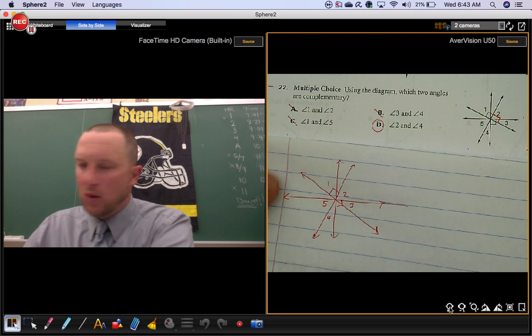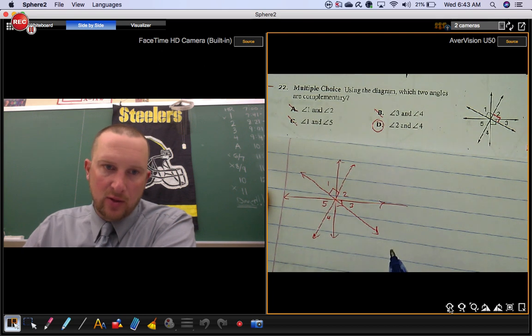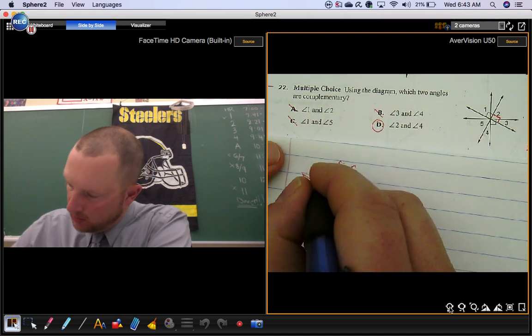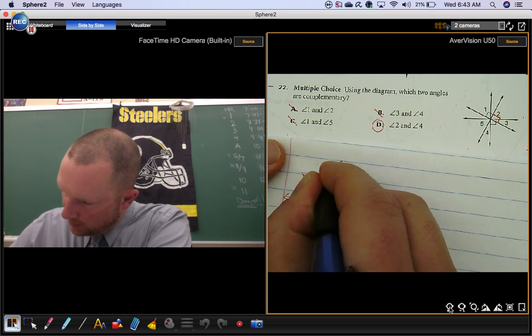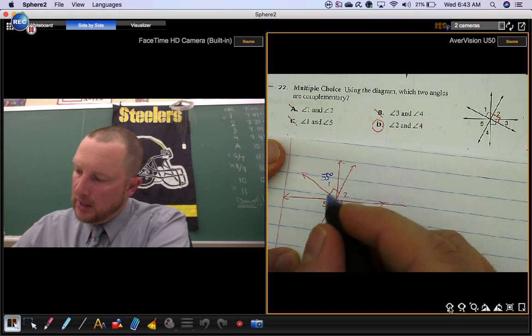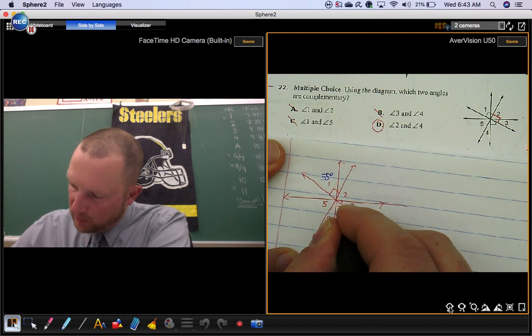We'll start with angle one. Angle one is part of a 90 degree angle. And it looks like it's the larger part of a 90 degree angle. So maybe we'll call it 55 degrees. Now, you know that its vertical angle down here is also 55 degrees.